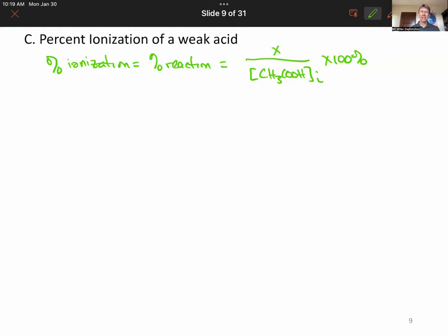This X is the X from your ICE table, where X is the concentration of hydronium. It is also the concentration of the conjugate weak base, which in this case is acetate, and it is the concentration of the products.